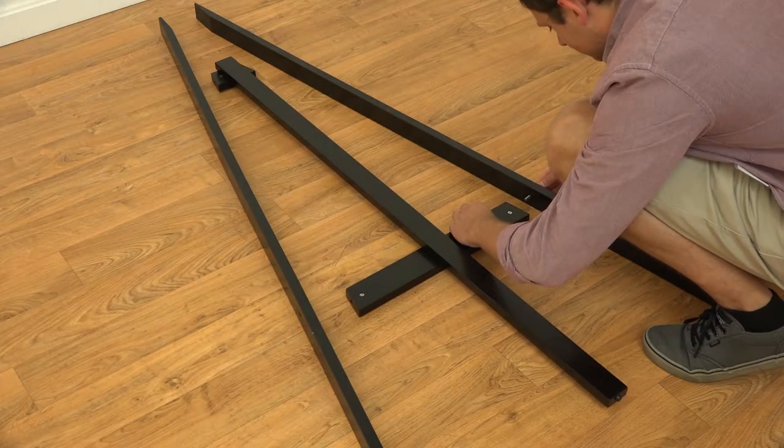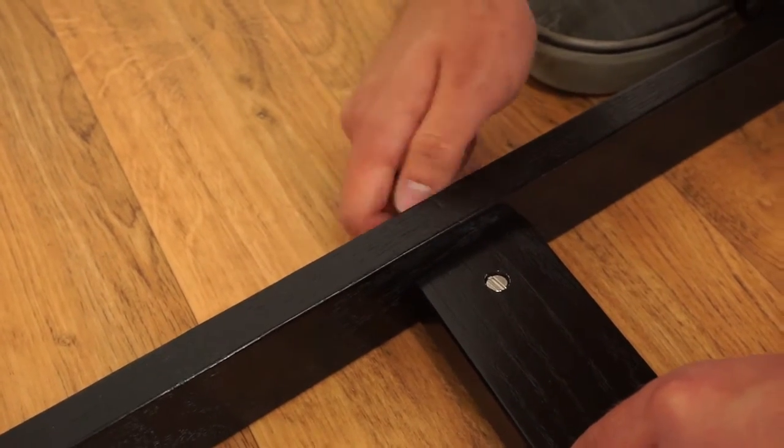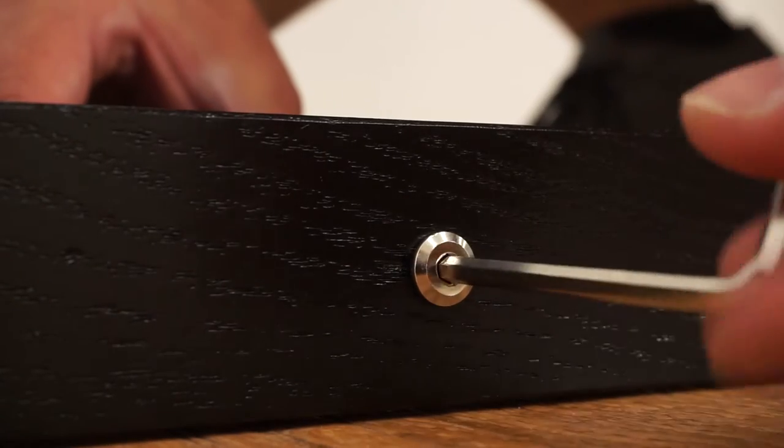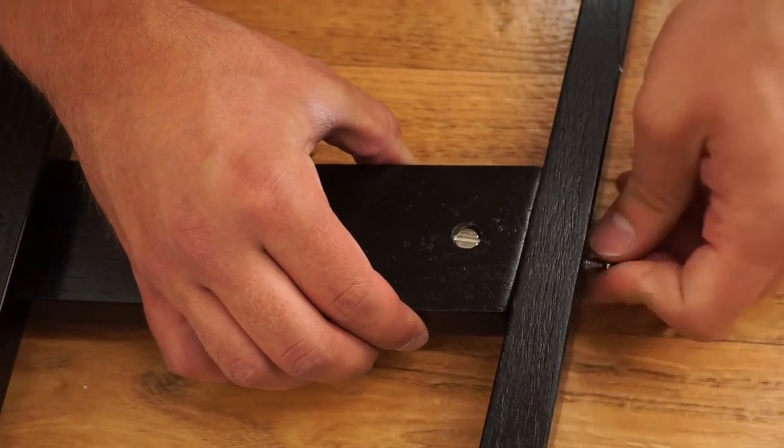Feed the hex head bolts through the easel leg and line it up with the dowel nut hole to screw these pieces together. Tighten it with the included allen wrench and then repeat these steps for the other side of the middle cleat crossbar.